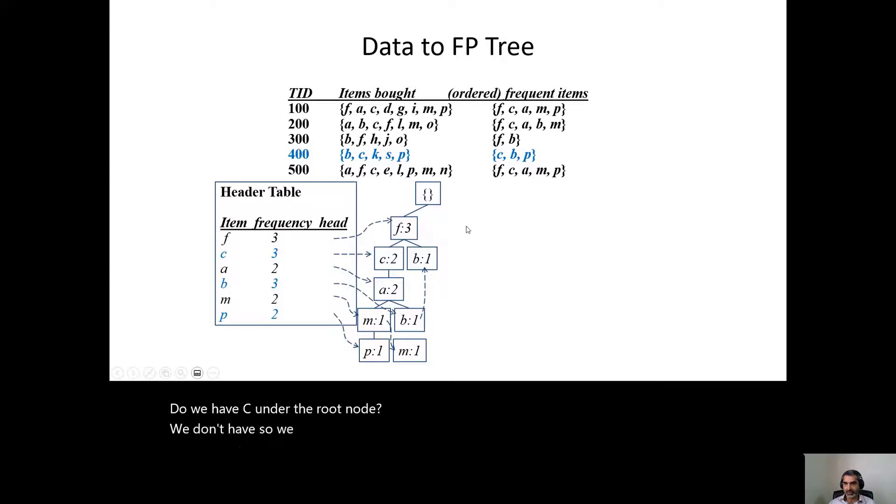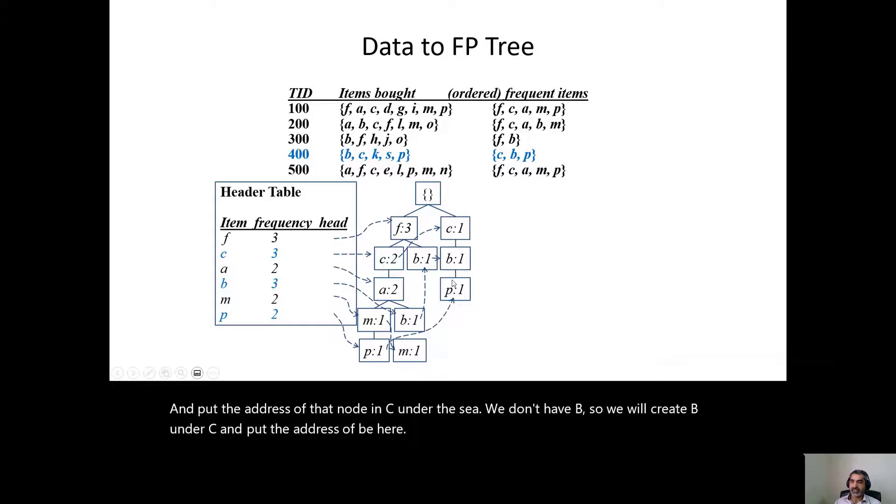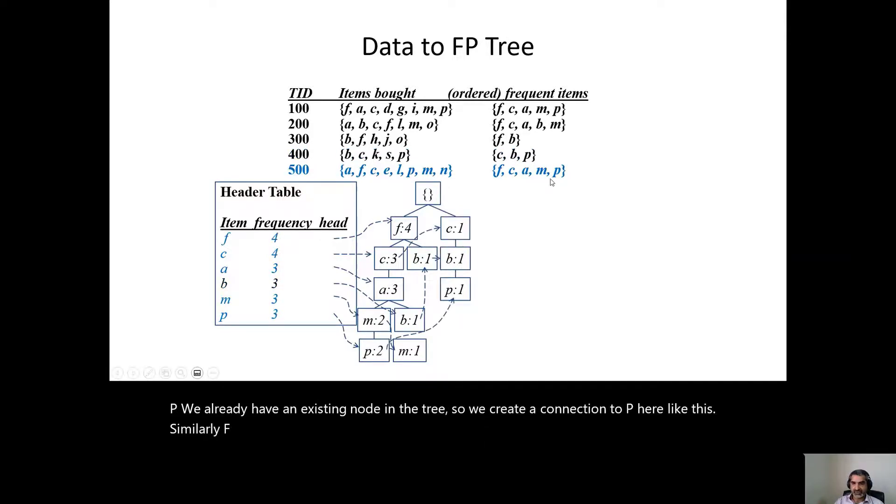So we will create a node C and put the address of that node in C. Under the C, we don't have B, so we will create B under C and put the address of B here. And then under B, we will put P. P, we already have an existing node in the tree, so we will create a connection to P here, like this. Similarly, F, C, A, M, P for the last transaction, we will have our complete tree like this.